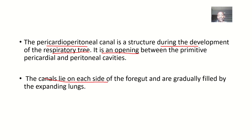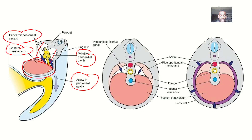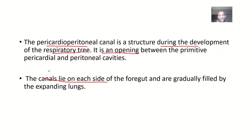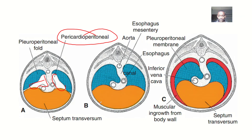These canals lie on each side of the foregut and are gradually filled by the expanding lung. You can see the pericardio-peritoneal canal on the left side and the pericardio-peritoneal canal on the right side. This is the developing lung, and that's the septum transversum. As the lung is developing, it will be filling up this space and expanding the canal to actually form the pleural cavity.